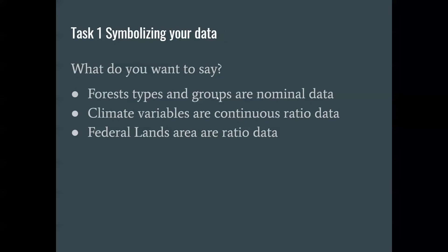Forest types and groups are nominal data. The climate variables are continuous ratio data in the case of precipitation, and continuous interval data in terms of temperature. Remember, temperature — unless it is essentially in Kelvin — we really don't see a true zero value. And then, of course, we have the federal lands, and we're going to look at those as ratio because we're going to be looking at their area.